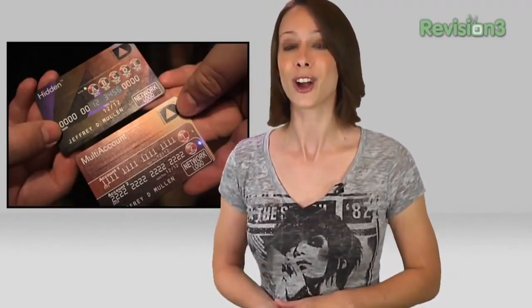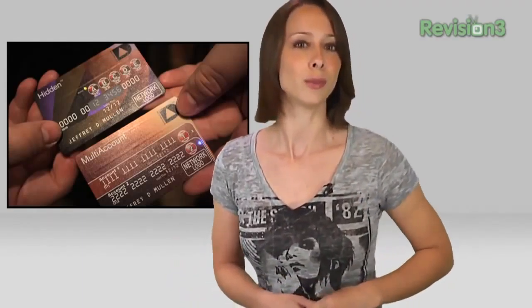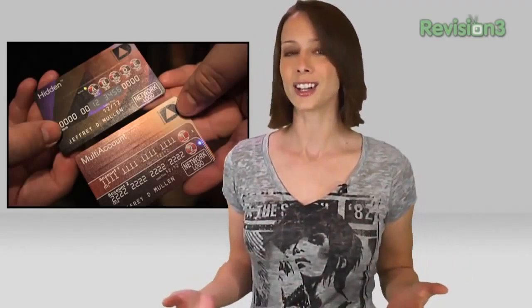Each of the cards have a programmable magnetic stripe so the information on the cards can be dynamically changed or wiped. One card, called Multi-Account, has two different credit card numbers that you can switch between by clicking a button. No second card necessary.